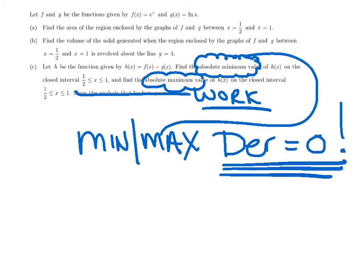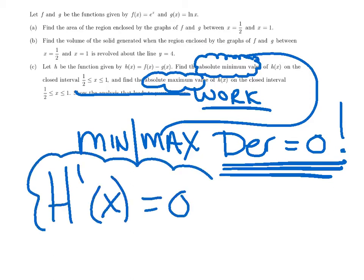So the first thing that you will actually get a point for is for saying h'(x) has to equal 0. Okay, missing that piece of information, again, is going to cost you a point. They want you to know the derivative equals 0.